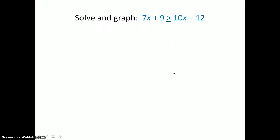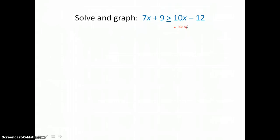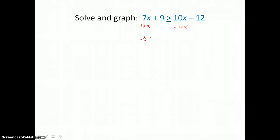In this example, we're going to solve and graph this inequality for x. We have x and constant terms on both sides of the inequality, so we want to get our x terms on one side and our numbers on the other. We'll start by moving our x terms to the left, subtracting 10x from both sides. 7x minus 10x is negative 3x, so we have negative 3x plus 9 on the left, which is greater than or equal to negative 12 on the right.